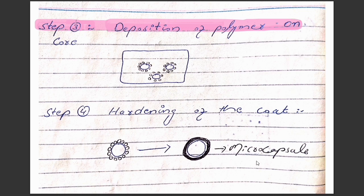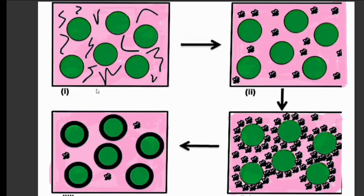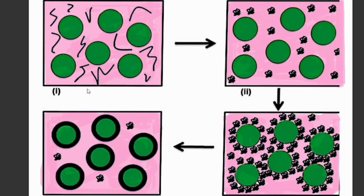Let me show you a diagram of how all these steps occur. This is the first step — preparation of dispersion. This pink color shows us the solvent, this thread-like structure shows us the polymer dissolved in the solvent, and this large green molecule shows us the core material or drug material dispersed. This was the preparation of dispersion phase.